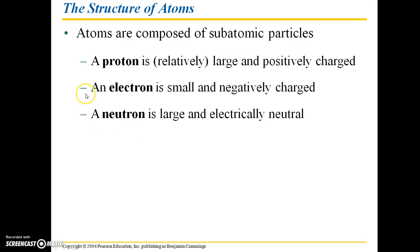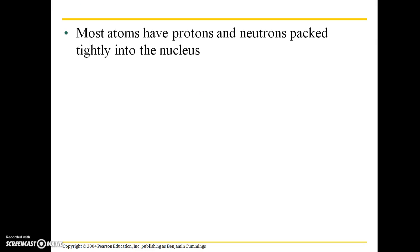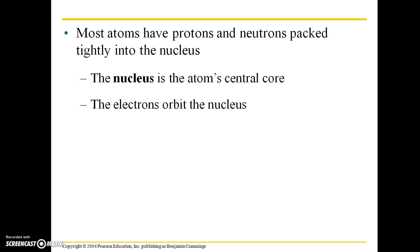The names kind of help you out here. Proton, proton positive. Neutron, neutral. Electron is negatively charged. Most atoms have protons and neutrons that are packed tightly into the nucleus. Just as cells have nuclei, atoms also have nuclei. The nucleus is the atom's central core, and the electrons are what orbit the nucleus.